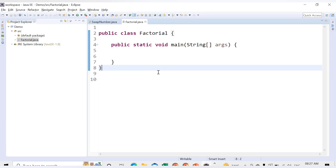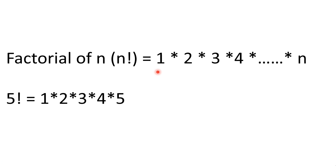Hello friends, welcome to CodeCrush Coding. In this video we are going to learn how to find the factorial of a number using Java programming language. Before that, what is the factorial of a number? The factorial of any integer is provided using this particular mathematical formula — if you want the factorial of n, it is represented using n followed by the factorial symbol.